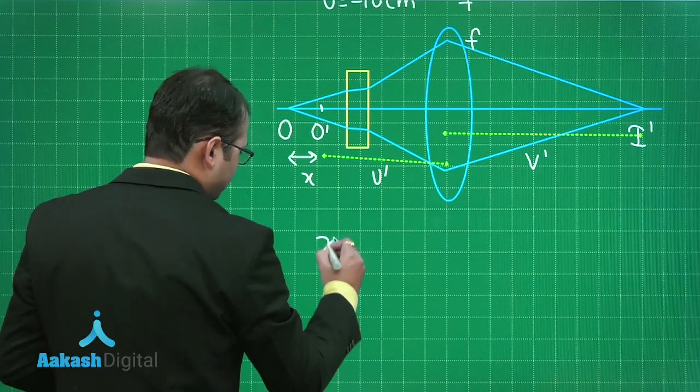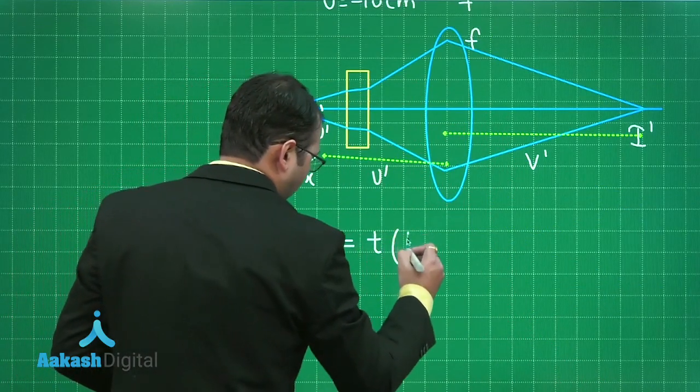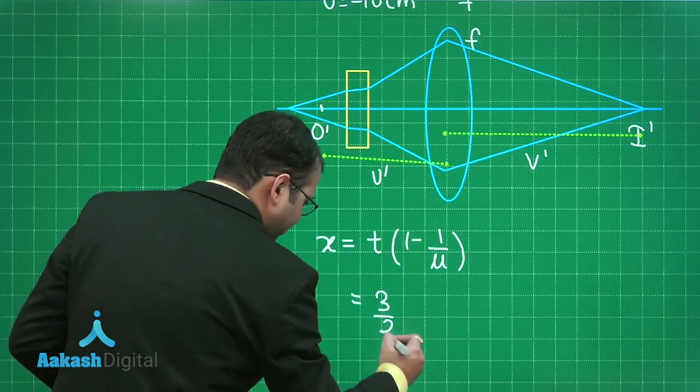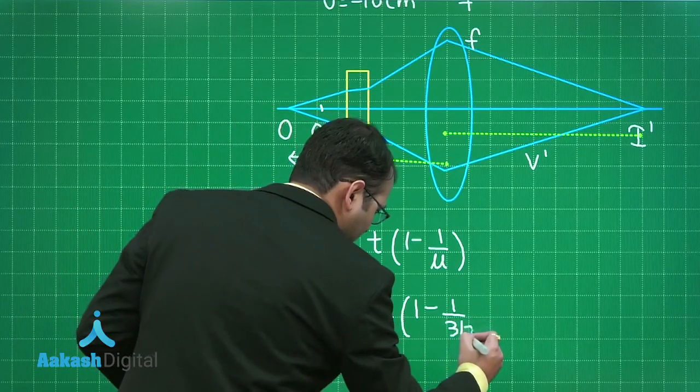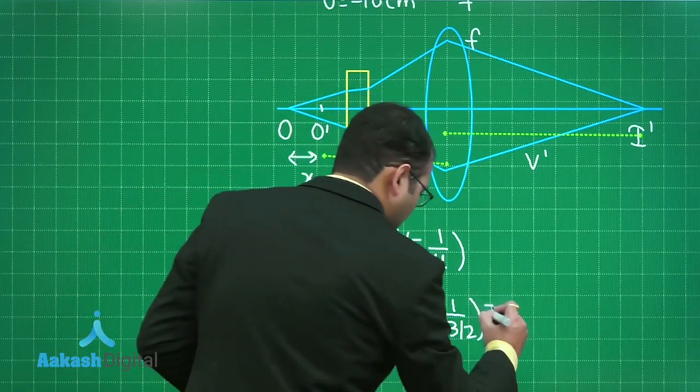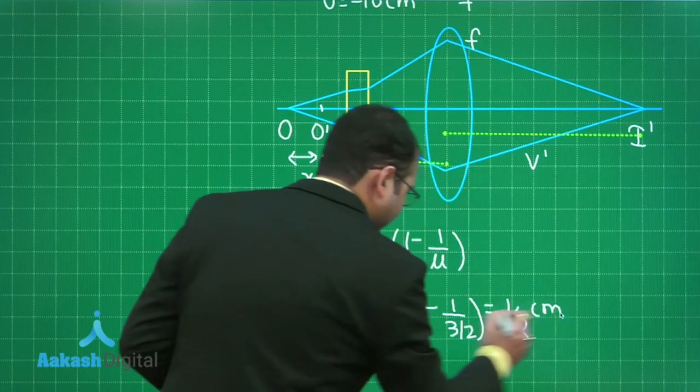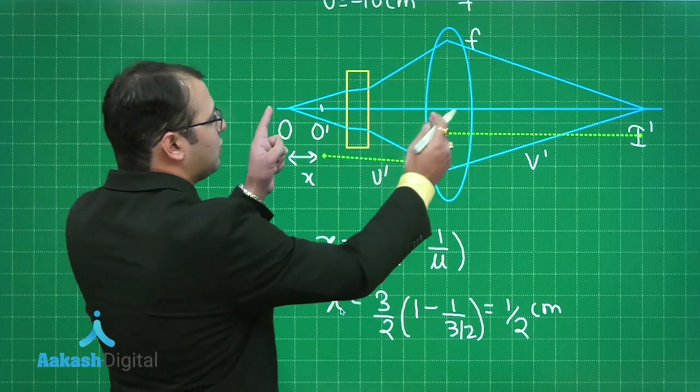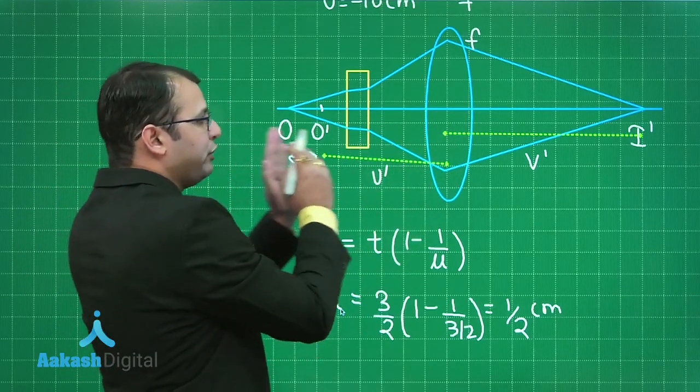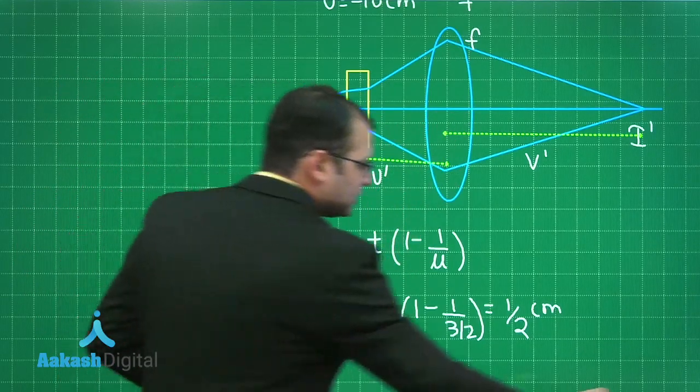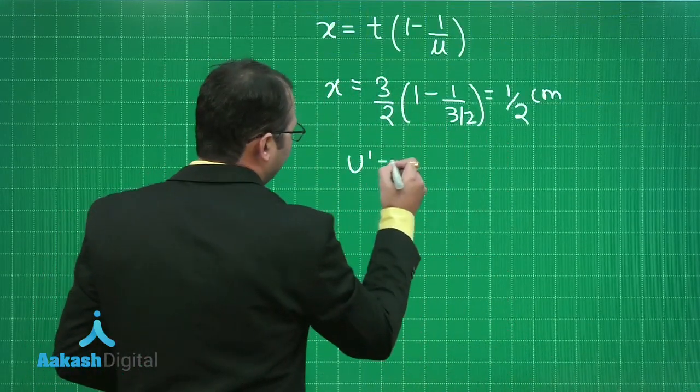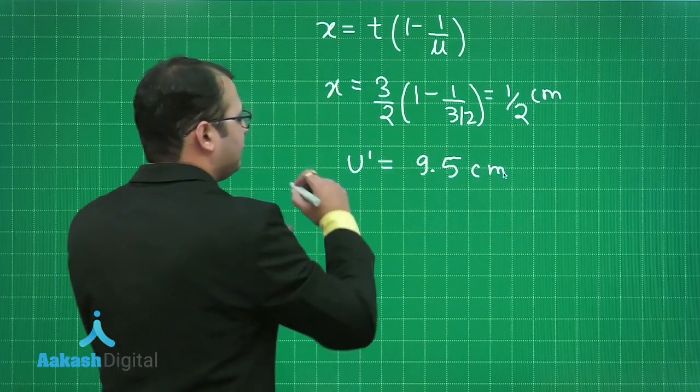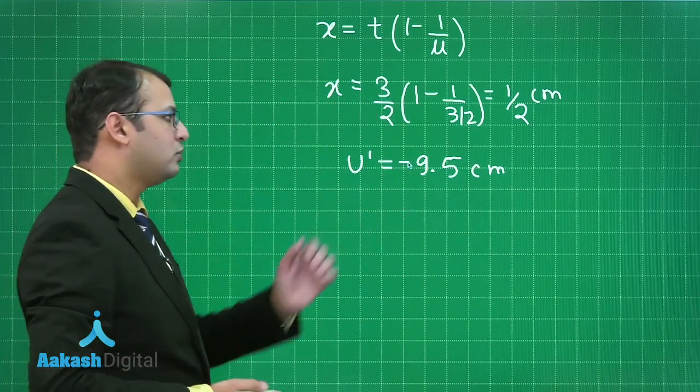So as per the formula of shift, I will write T(1 minus 1 by mu). What is the value of thickness? 3 by 2, 1 by 3 by 2, that is the refractive index of this glass. So it would be simply half centimeter. So what was the initial length? The initial length from lens of the object was 10. Now it has shifted 0.5 towards the lens. That means the value of U dash would be simply 9.5 centimeter and since it is on the left hand side that is opposite to the first light that it would be minus.